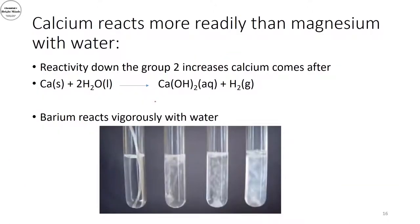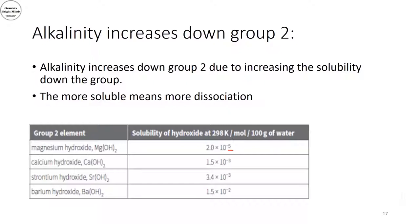Calcium reacts more readily than magnesium or beryllium — it reacts with water at room temperature, giving calcium hydroxide and hydrogen gas. Beryllium also reacts with water, releasing hydrogen gas and beryllium hydroxide. The alkalinity of group 2 elements increases going down the group.